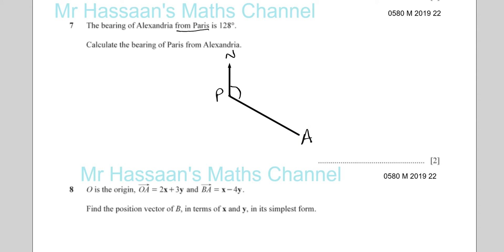Now the bearing of Alexandria from Paris is 128. Now 128 is an angle which is more than 90 but less than 180 degrees. So it's somewhere along here. You don't have to be precise. Just make a sketch for our purposes here. And that's where we can say is Alexandria. The angle is 128 degrees. And we've got to find the bearing of Paris from Alexandria. So now we've got to start from Alexandria and make a north line at Alexandria. Bearings are always measured in the clockwise direction, starting from the north line.